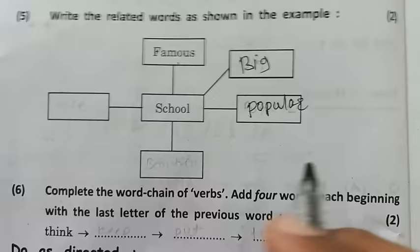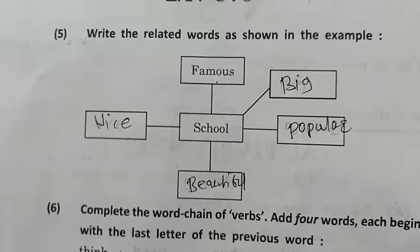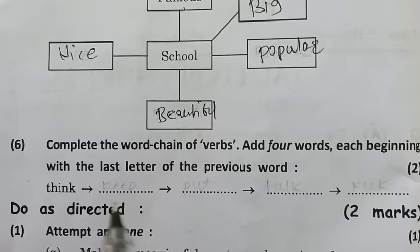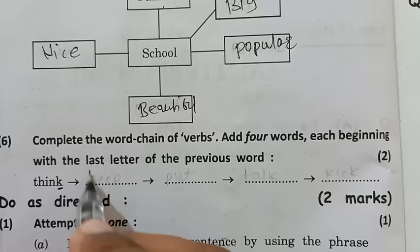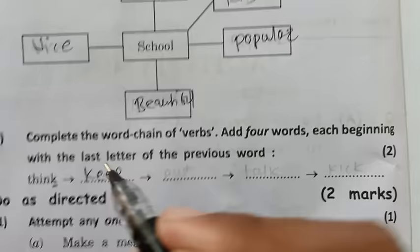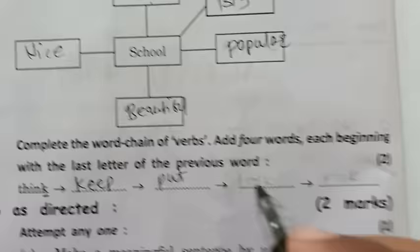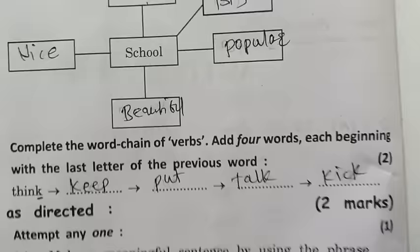Here is the word chain of verbs. We have to make a verb chain. Think — the last letter is K, so we can write 'keep,' then 'put,' then 'talk,' then 'kick' for K. This is the verb chain.